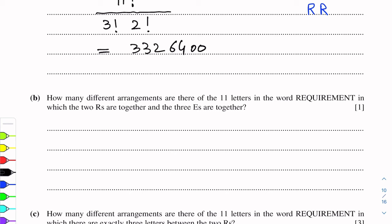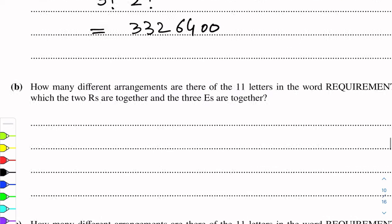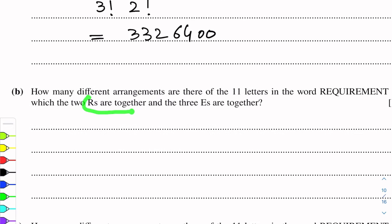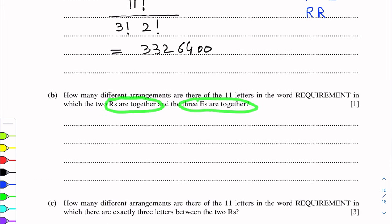Part B of this question is: how many different arrangements are there of the 11 letters in the word REQUIREMENT in which the two R's are together and three E's are together? We have to calculate with this restriction.